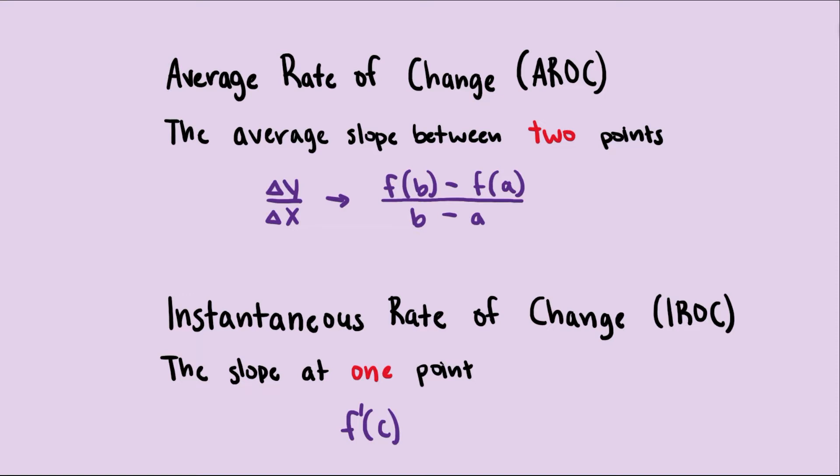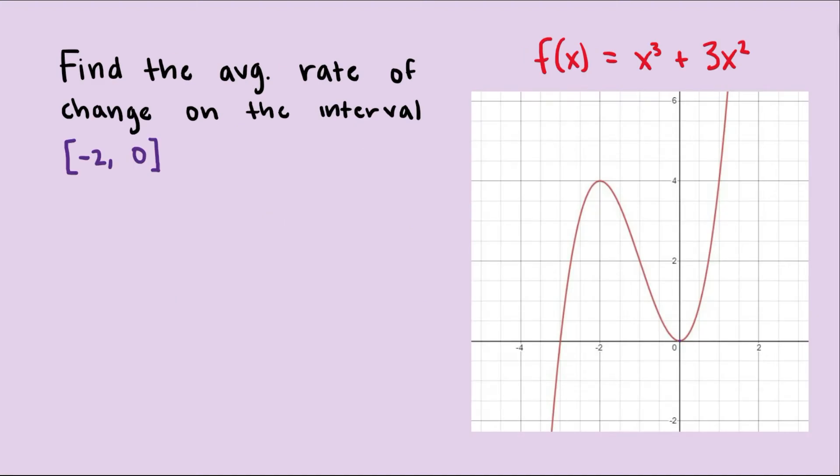The instantaneous rate of change is the slope at one point. So if we take the derivative of a function at a point c, then we'll get the instantaneous rate of change. I went over that pretty quick, so let's go over some examples.